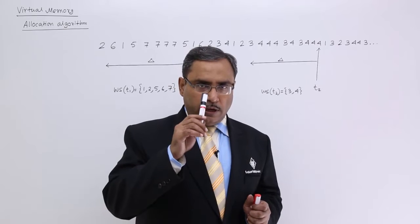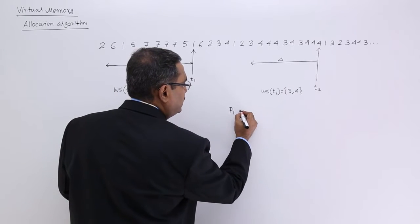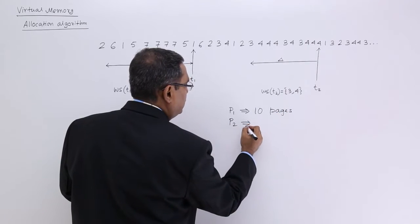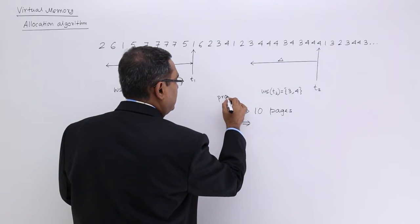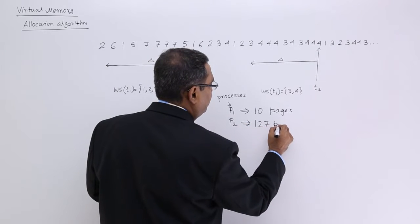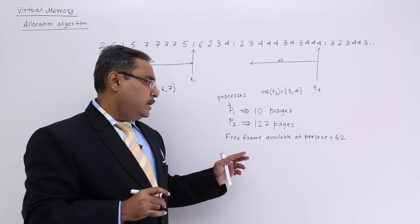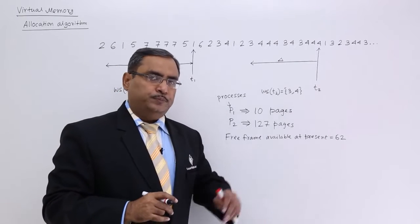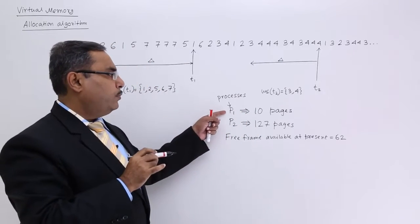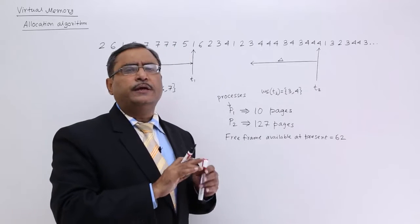Let me give an example to clear the concept. Suppose P1 is a process having 10 pages, and P2 is another process having 127 pages. The number of free frames available is 62. So we have 10 pages required for P1 and 127 pages for P2, but only 62 free frames available right now.